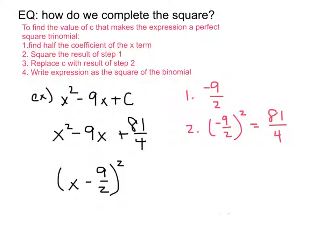We answered two questions with this problem. First, if we were simply asked to complete the square, we completed the square and wrote it as the square of the binomial. And if asked what value of C makes this a perfect square, we replaced C with 81 over 4. So there are multiple questions we are answering at the same time.